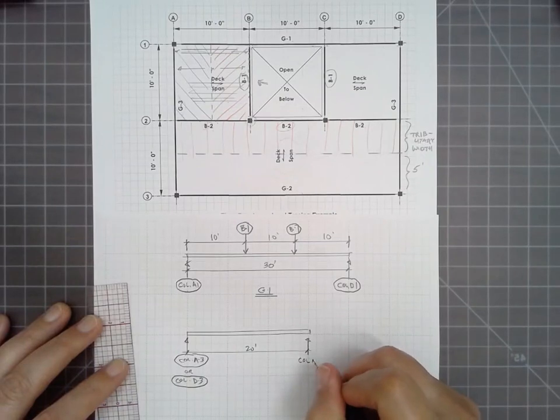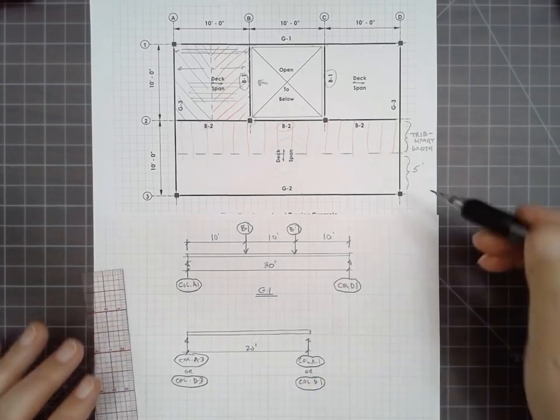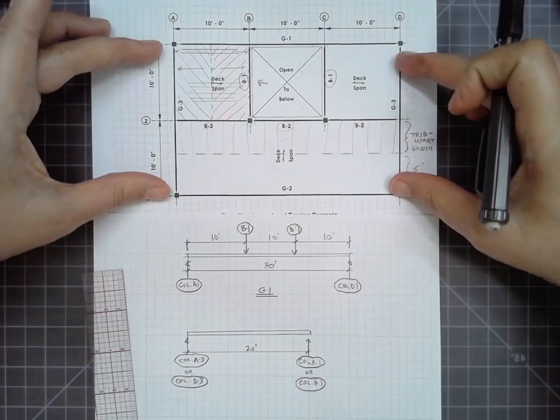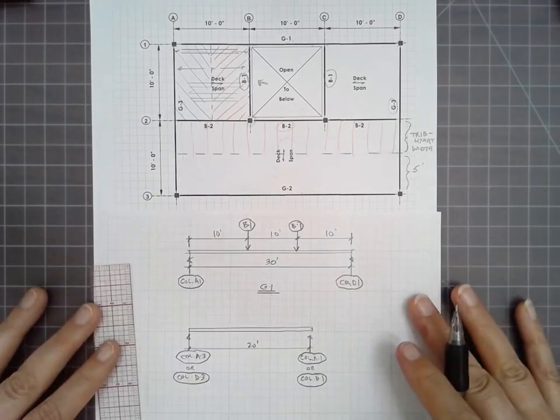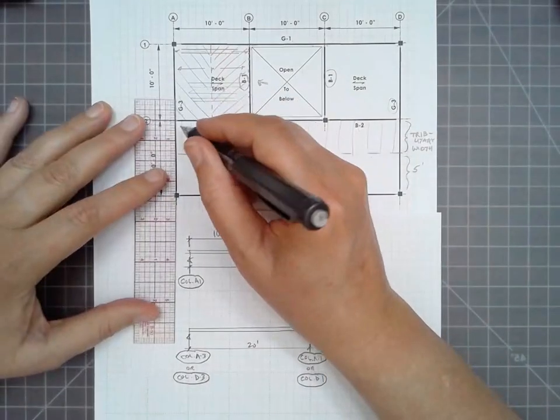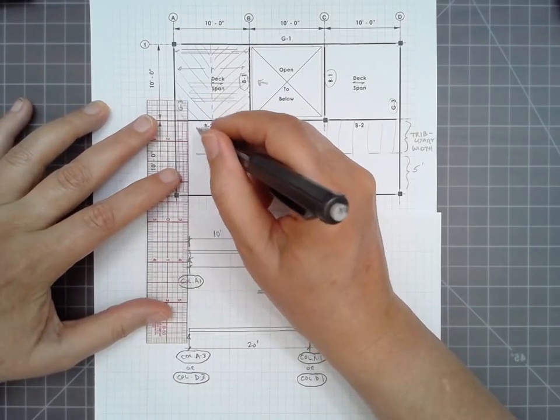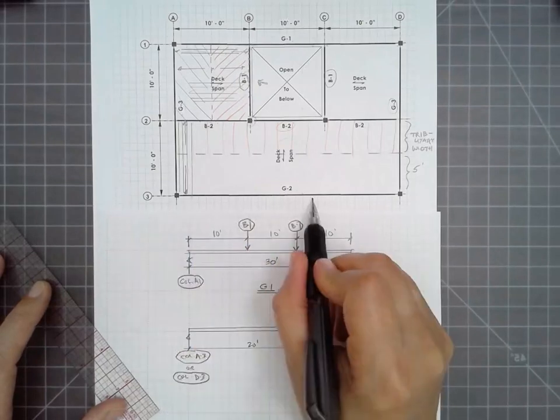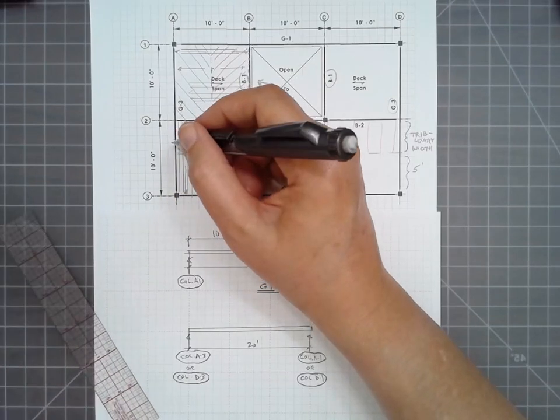We're on column A3 or column D3. At the other end, we're either at column A1 or D1. That depends on the particular member that we're talking about. These have exactly the same loading, so we give them the same designation of G3. Now, the loads here are different than anything else. For one thing, this portion of the beam has no load. We look at the span of the deck. It's going this way. It carries its load up and down, so it all goes either to G2 or B2.